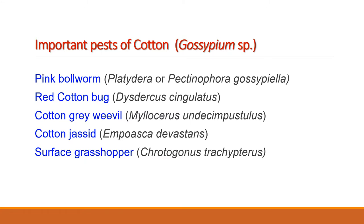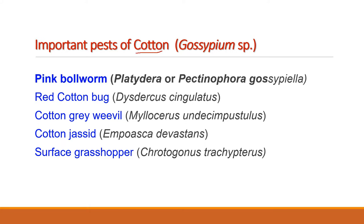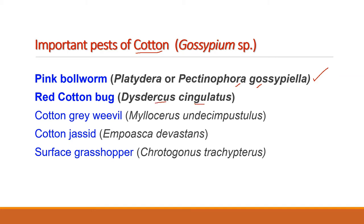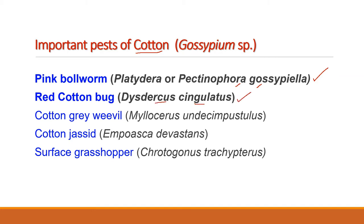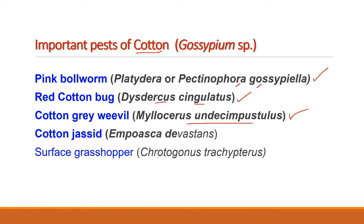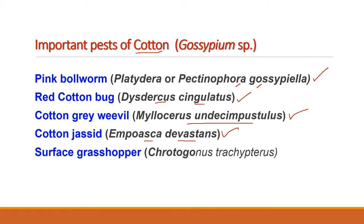Today we are going to discuss five different pests of cotton: the pink boll worm, Pectinophora gossypiella; red cotton bug, Dysdercus cingulatus; cotton grey weevil, Myelocerus undisimpustulatus; cotton jassid, Amrasca devastans; and surface grasshopper, Poecilocerus pictus.